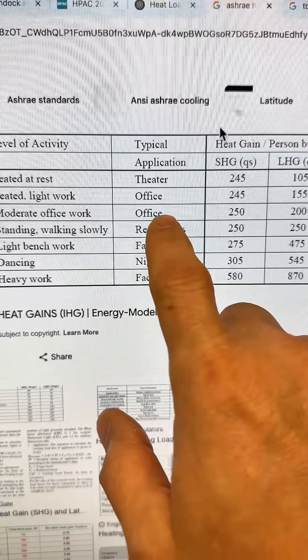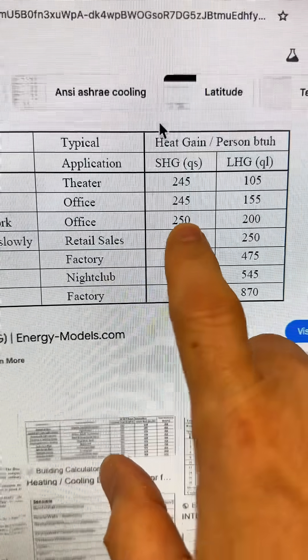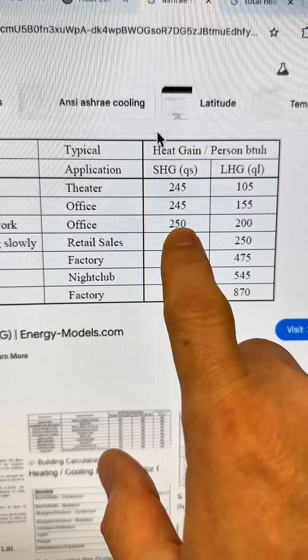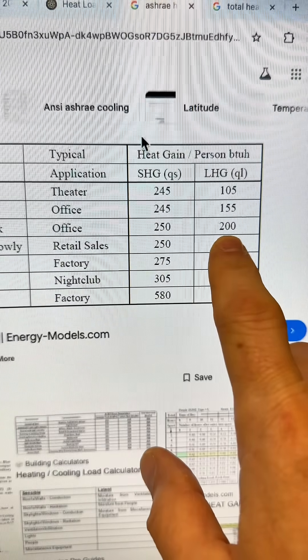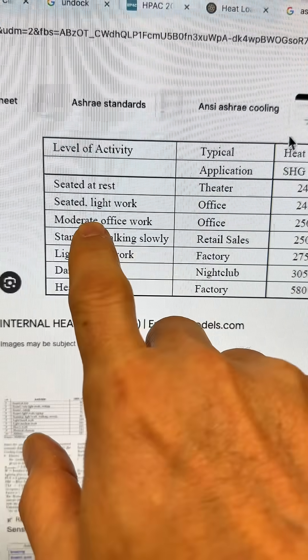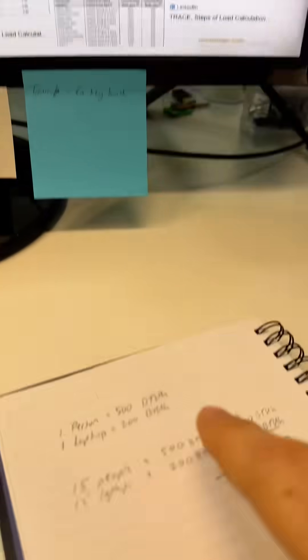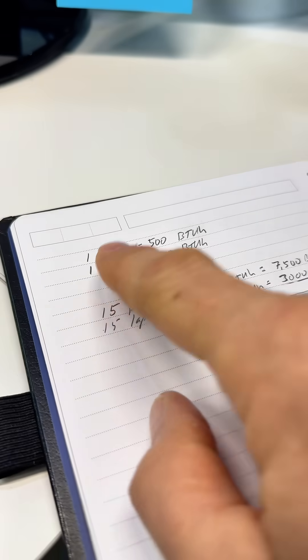Moderate office work is 250 BTUs per hour sensible and 200 latent. Now I always use 500 total BTUs per person as a rule of thumb.